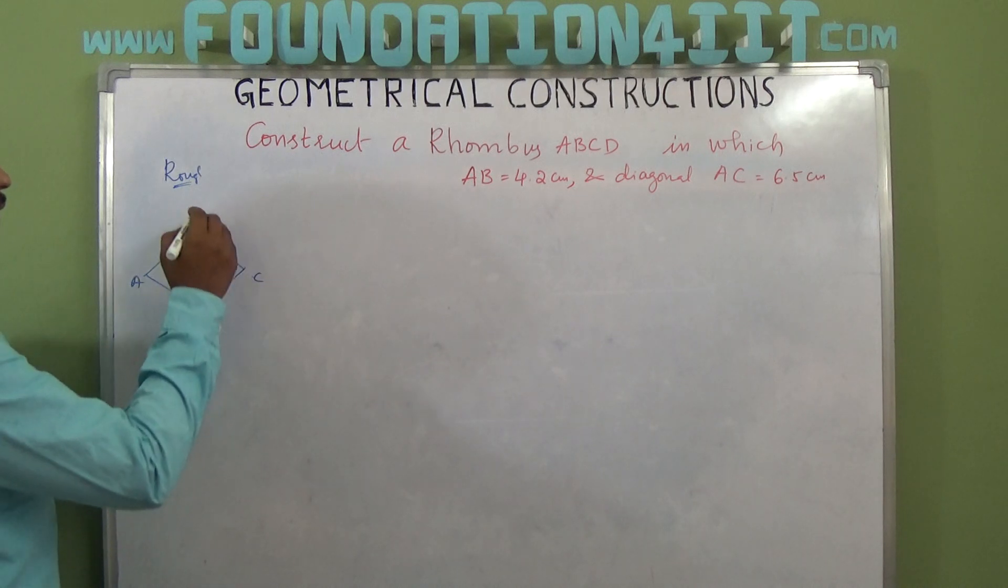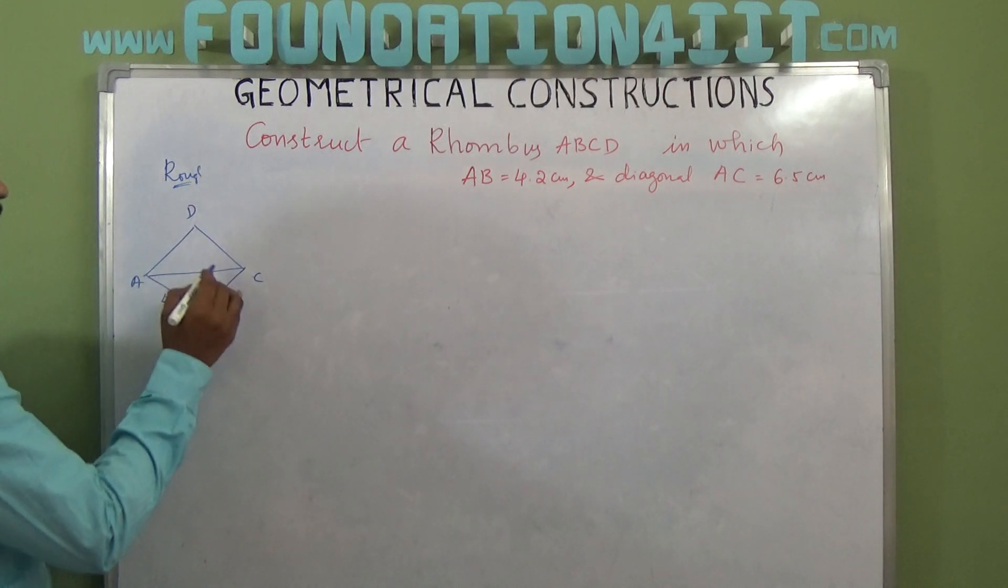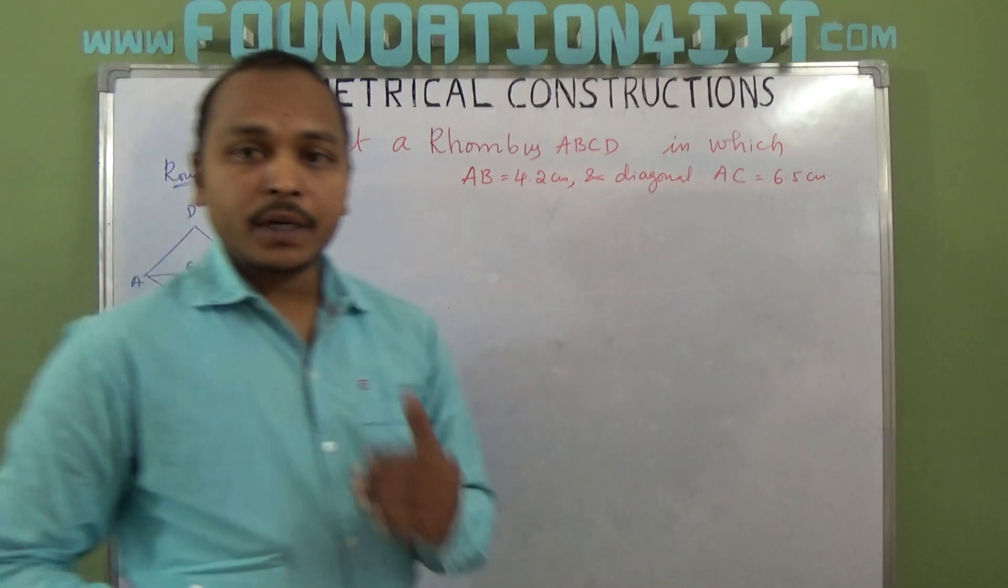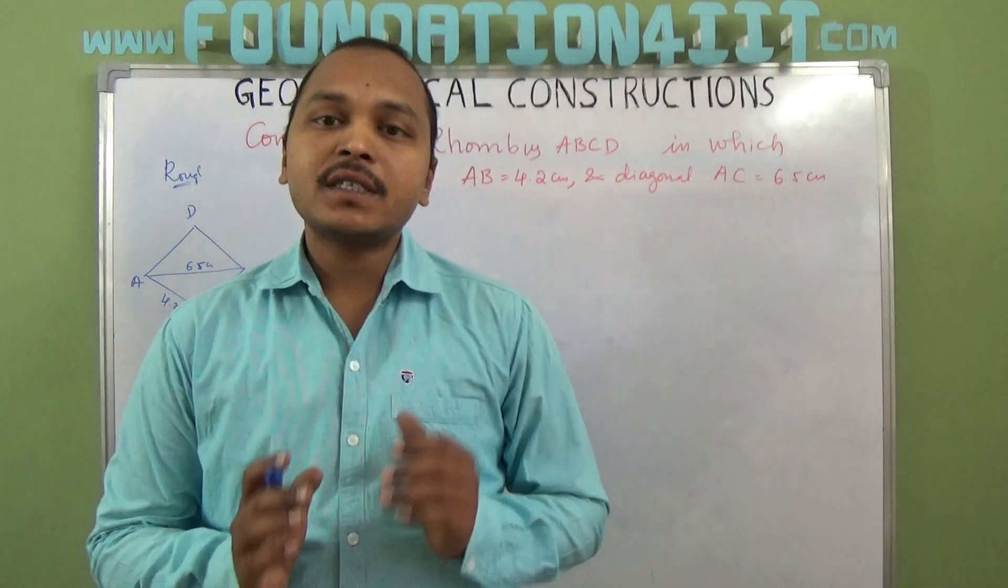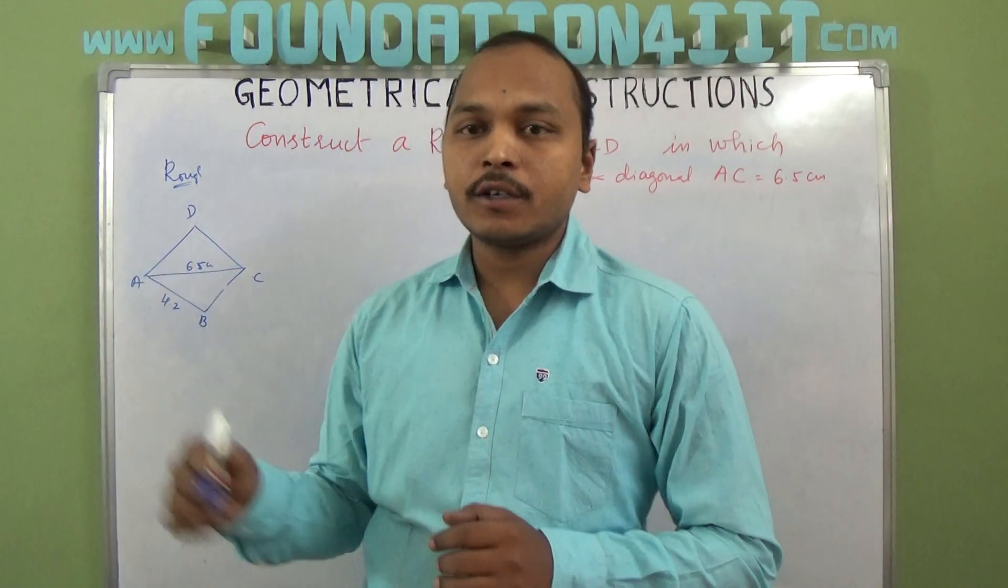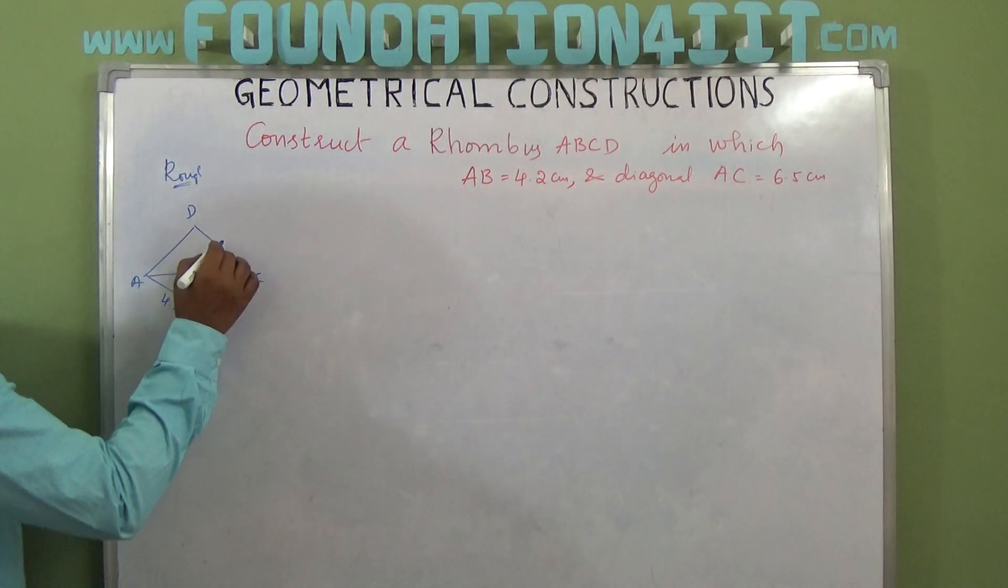Rhombus rough diagram: if you observe ABCD, AB is 4.2 and AC is 6.5 centimeters. According to the properties of the rhombus, every side is equal. So BC, CD, and AD are also equal. If AB is 4.2, then BC is also 4.2 centimeters.